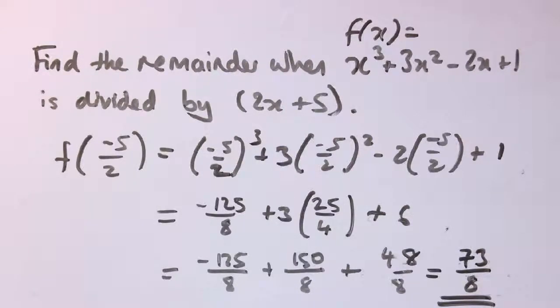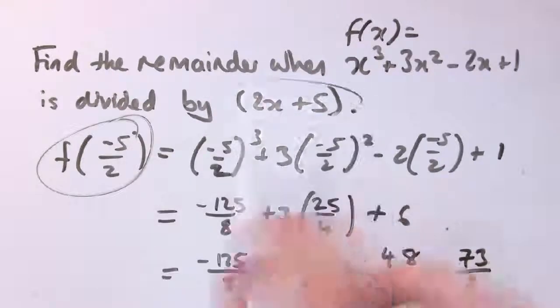This video is part of those three on the simple factor and remainder theorems, as well as this extended factor and remainder theorem. But it's exactly the same idea. The thing we're substituting in here is always just whatever makes this bracket zero.